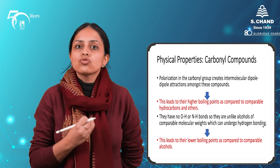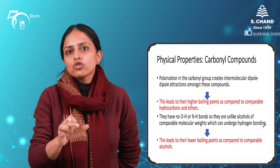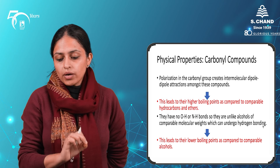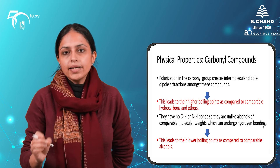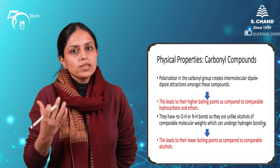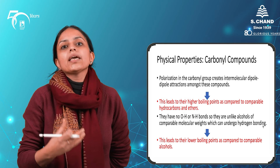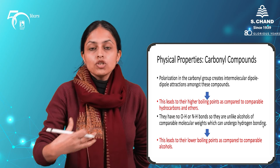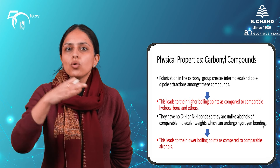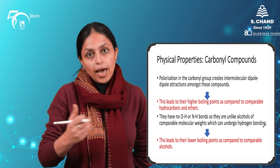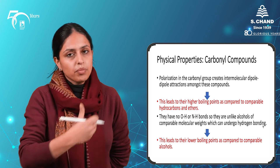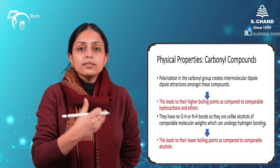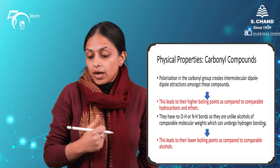Alcohols have a hydrogen atom directly attached to the oxygen, and because of this OH group they can undergo hydrogen bonding. Carbonyl compounds like aldehydes and ketones, however, do not have such a hydrogen atom, so they cannot undergo hydrogen bonding amongst themselves. Because of this, their boiling points are lower as compared to alcohols but higher as compared to alkanes.